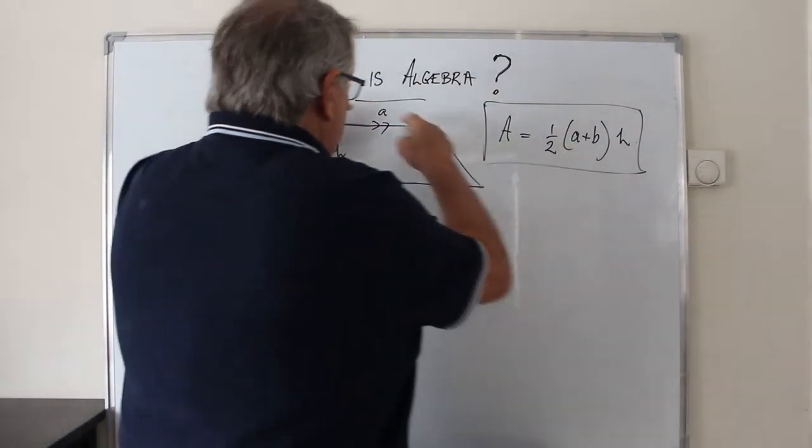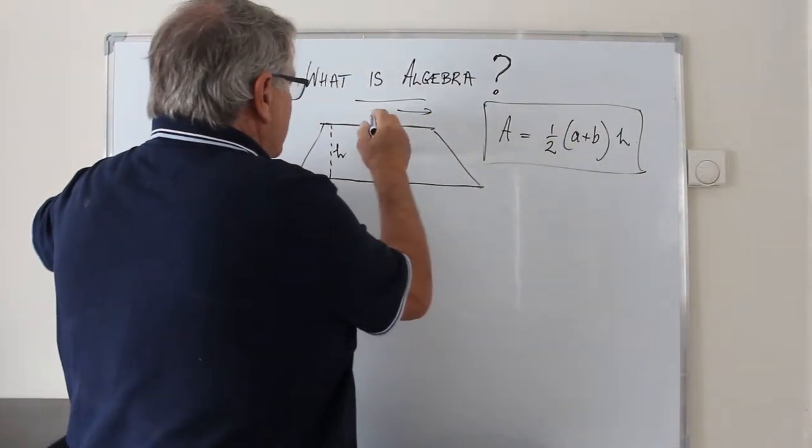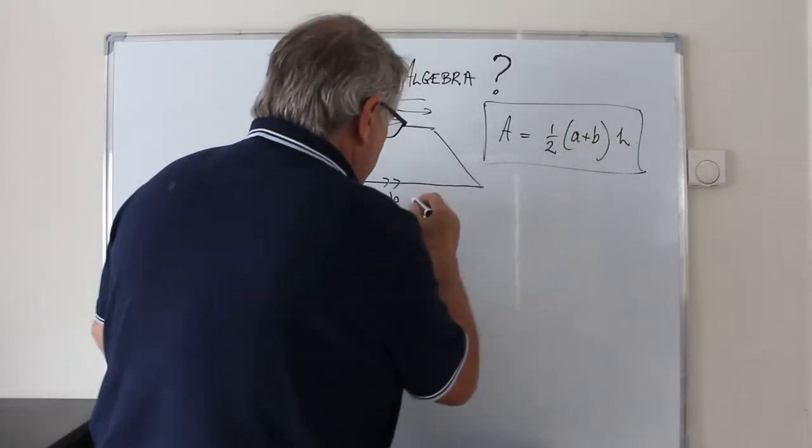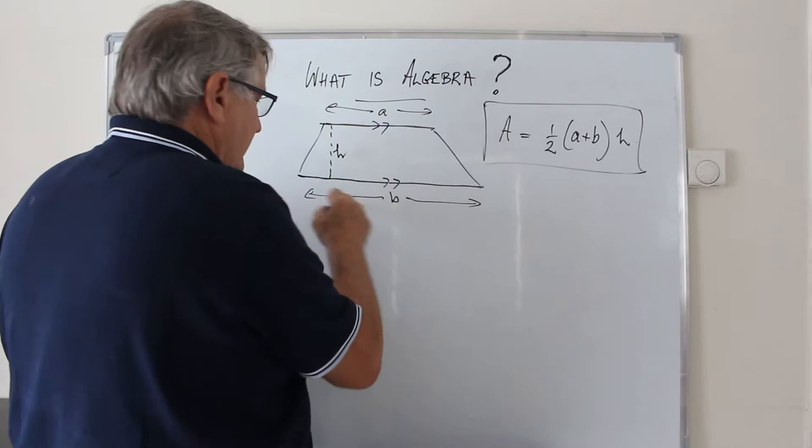This letter a is representing the length of the shorter of the two parallel sides. And this letter b is representing the length of the longer side.